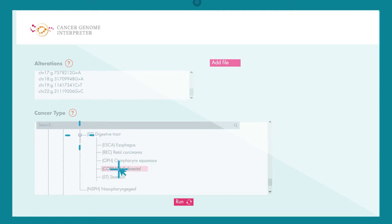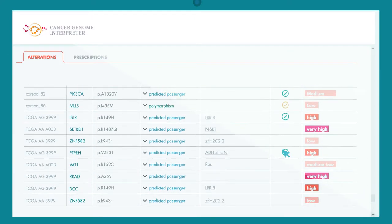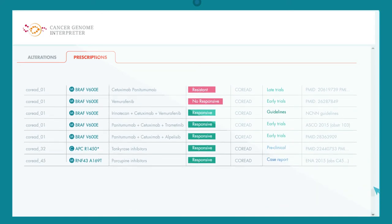CGI generates a report detailing which mutations are more likely to play a role in the tumour growth and inform about the anti-cancer therapies that can target these genomic alterations in that context.